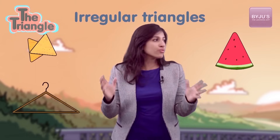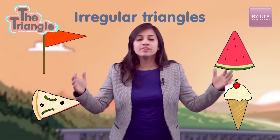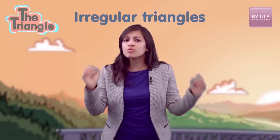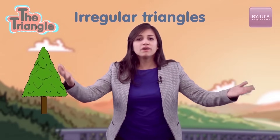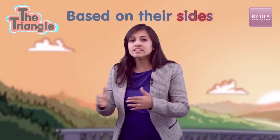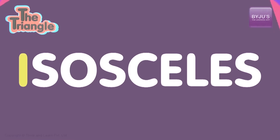Now let's talk about irregular triangles. If you look around you, you see them everywhere — in objects, when you take a stroll in the park, when you pass by a construction site, everywhere. So first let's talk about triangles categorized based on their sides.